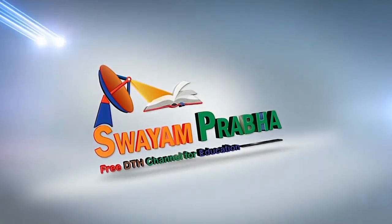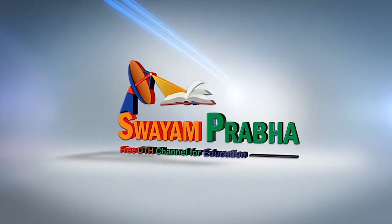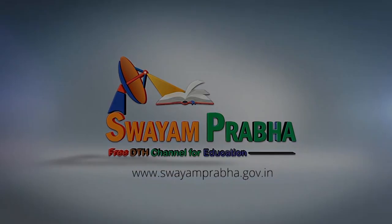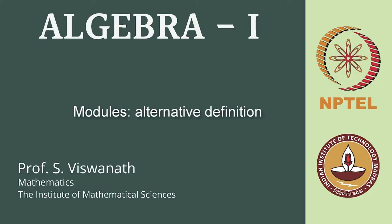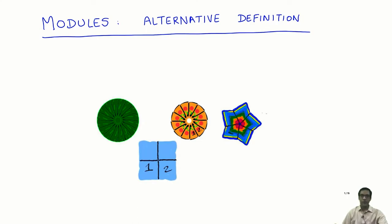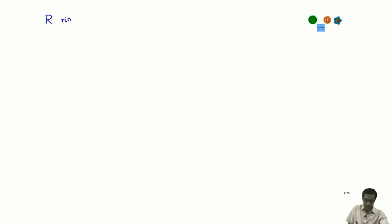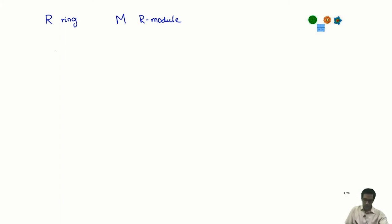Welcome to Swayam Prabha. Today we will talk about an alternative definition of the notion of modules. We have seen that we need a ring R, and a module M is an abelian group with a scalar multiplication by scalars from R. Our goal for this lecture is to rephrase the axioms that scalar multiplication satisfies in a more compact form.